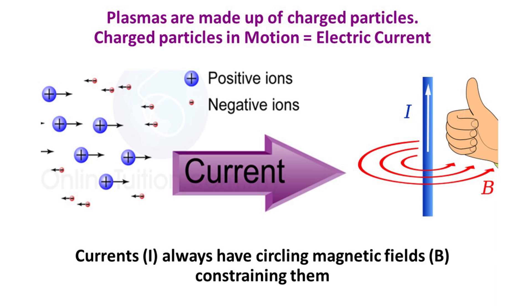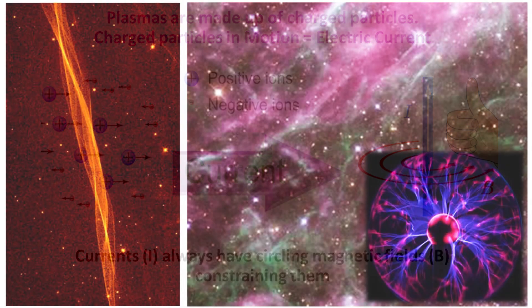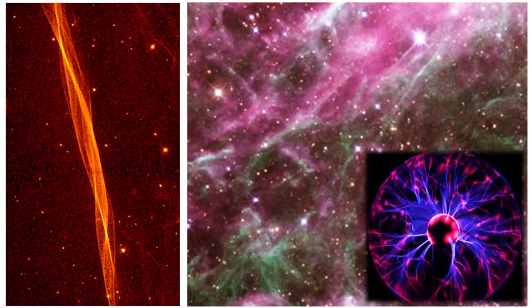Plasmas are made up of charged particles, sometimes called ions. Charged particles in motion is the definition of an electric current. So plasmas usually have electric currents associated with them. One key thing to remember is that all electric currents, I on this chart, have circling magnetic fields, B, which obey the right-hand rule. If the thumb points in the current direction, the fingers curl in the magnetic field direction. So plasma currents are constrained by their circling magnetic fields. Therefore, plasmas typically form filaments and sheets.